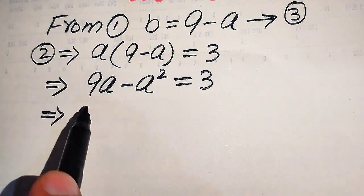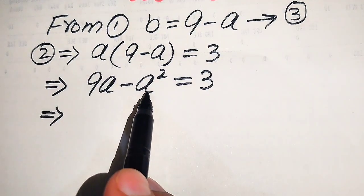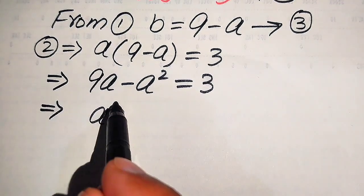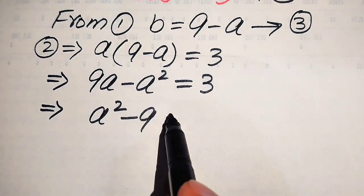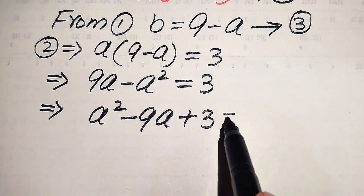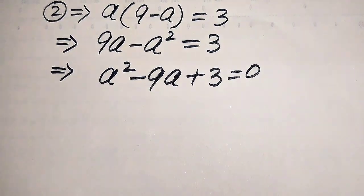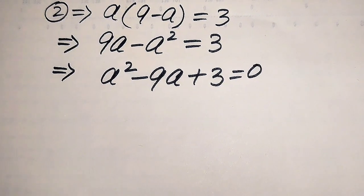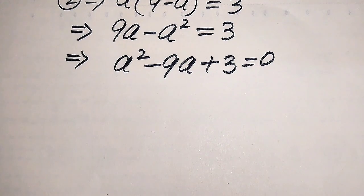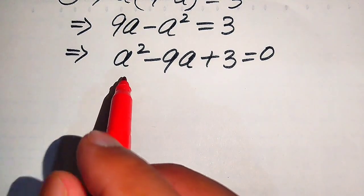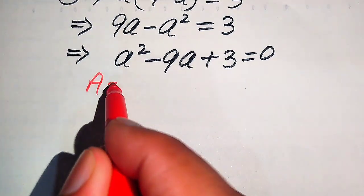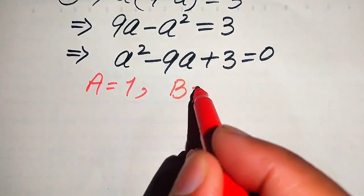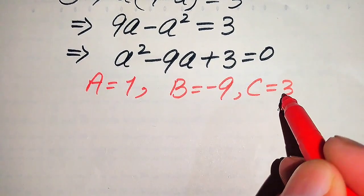We move all terms to the right-hand side: minus a squared becomes plus a squared, plus 9a becomes minus 9a, giving a squared minus 9a plus 3 equals to 0. This is a quadratic equation. There are three methods to solve it: factorization, completing the square, or the quadratic formula. Here we use the quadratic formula, with coefficients a equals 1, b equals minus 9, and c equals 3.